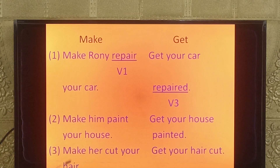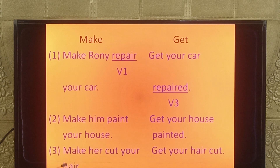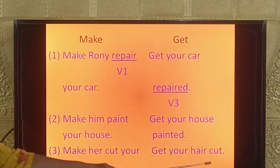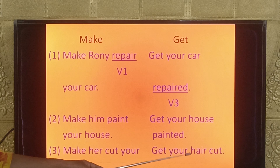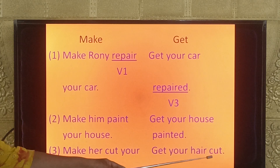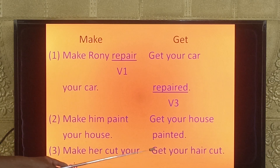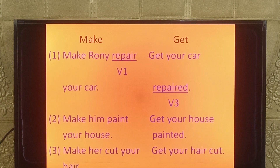Third example — with make: 'Make her cut your hair.' Here make is followed by 'her' (pronoun), then 'cut' (V1 form), then 'your hair' (object). With get: 'Get your hair cut.' After get, the object 'your hair' comes first, then 'cut' (V3 form), done by someone who is an expert.